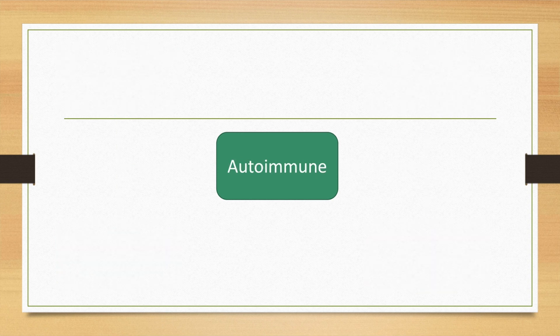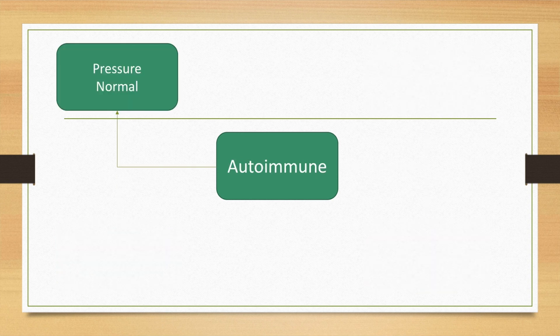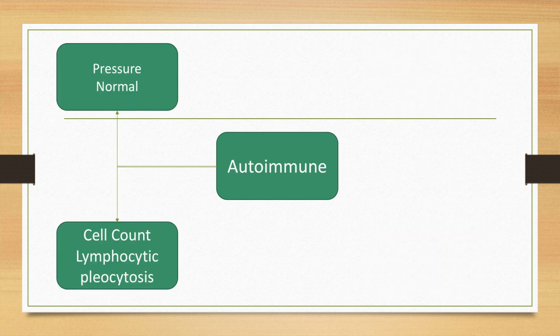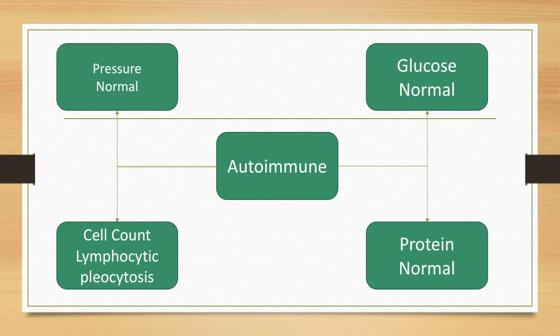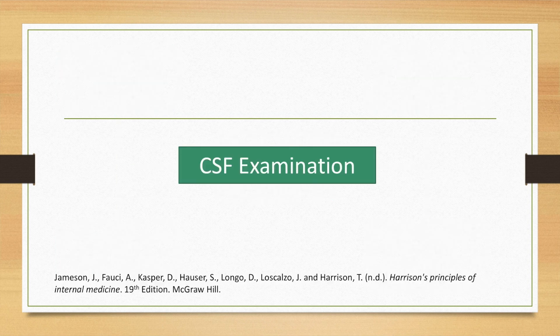In autoimmune encephalitis, the pressure is normal, the cell count is predominantly lymphocytic, the glucose is normal, and the protein is also normal.